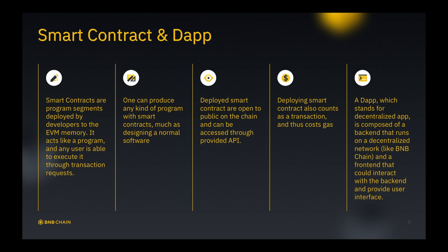A dApp, which stands for decentralized application, is composed of a backend that runs on a decentralized network. The backend normally can be a smart contract, and a frontend that will interact with the backend and provide a user interface. So the backend of a decentralized application is a smart contract running on a decentralized network — that's why it's called a decentralized application — and the frontend is the client application that calls functions on the smart contract.